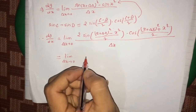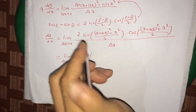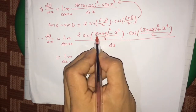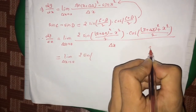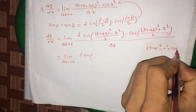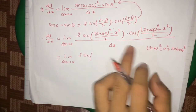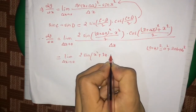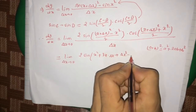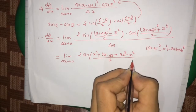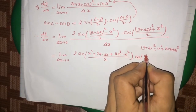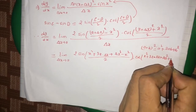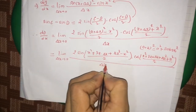Now we simplify the terms inside sin and cos. We open the bracket (x + Δx)², which is in the form (a + b)² = a² + 2ab + b². Using this, the terms inside sin become: [x² + 2x·Δx + Δx² − x²] / 2, and inside cos: [x² + 2x·Δx + Δx² + x²] / 2, all divided by Δx.